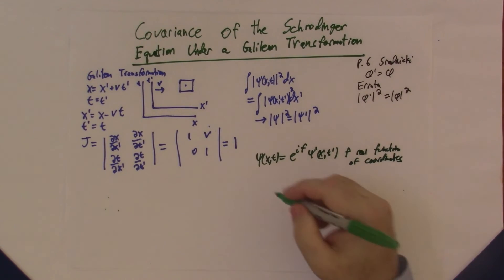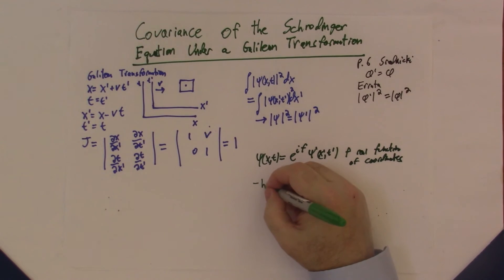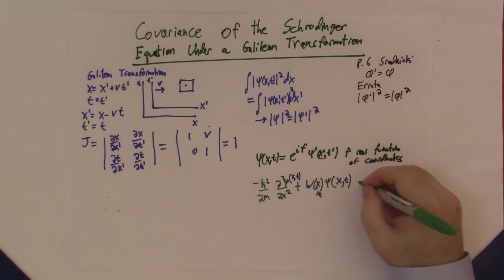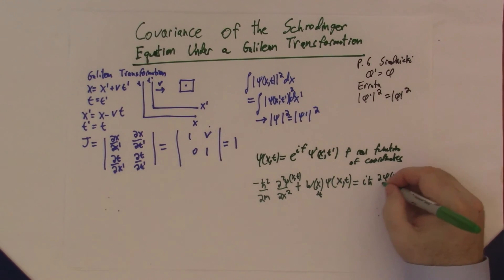So the Schrödinger equation, if we write it down, is -ℏ²/2m times the second derivative plus the potential. We're going to work in one dimension here; the extra dimensions for using the Laplacian won't give us anything new. I'm going to write W for the potential instead of V, because I'm using v for the velocity. This is the standard time-dependent Schrödinger equation.